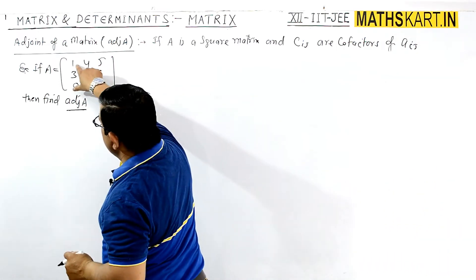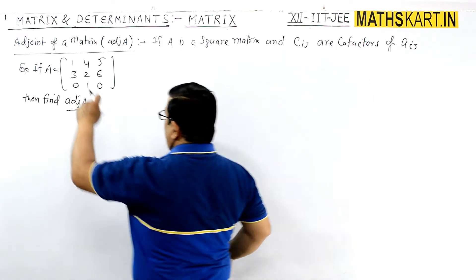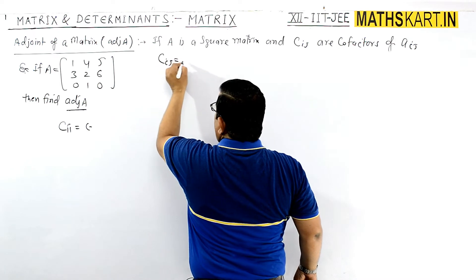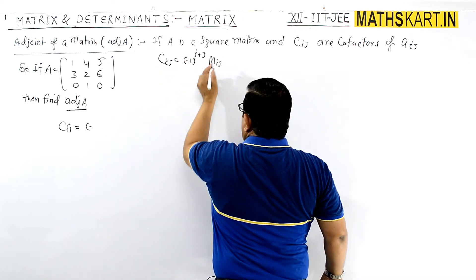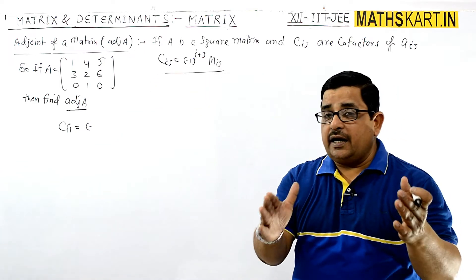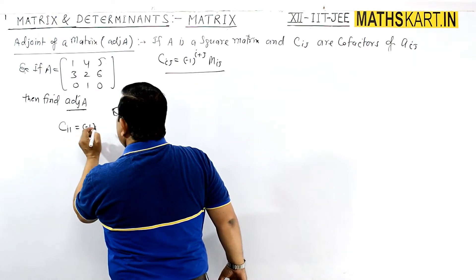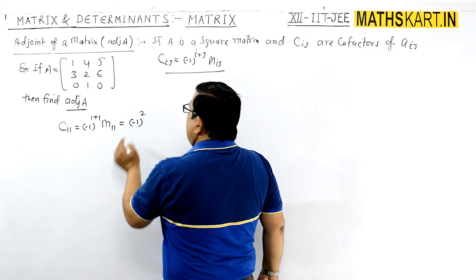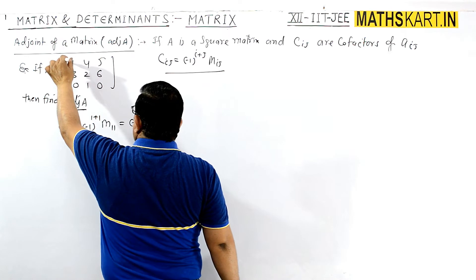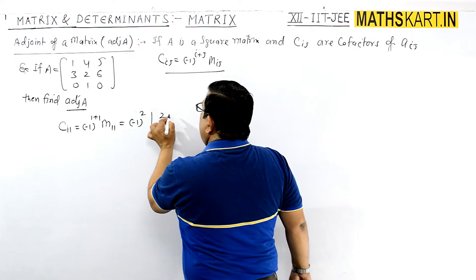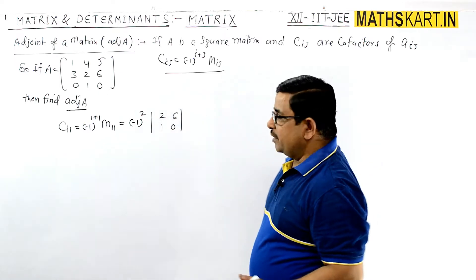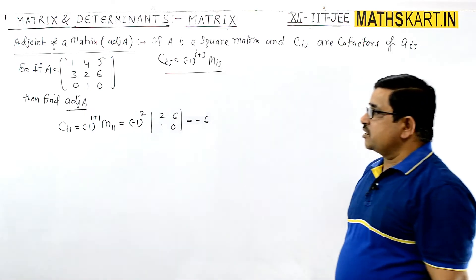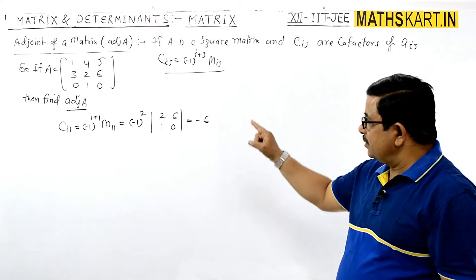First we will work out all cofactors. C_11 is the first position. The formula is C_ij = (-1)^(i+j) × M_ij. So C_11 = (-1)^(1+1) × M_11 = (-1)^2 × M_11, which is positive. For M_11, just leave the first row and first column. The remaining 2×2 determinant is |2,6; 1,0| = 0 − 6 = −6. So the cofactor at position 1,1 is −6.